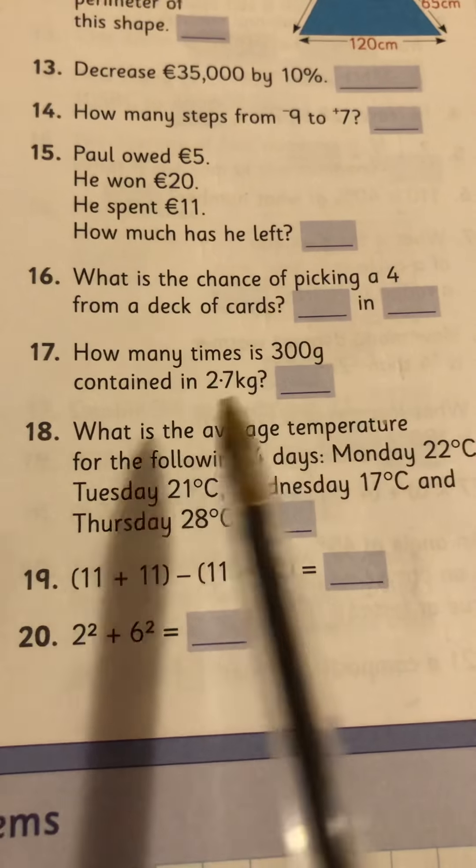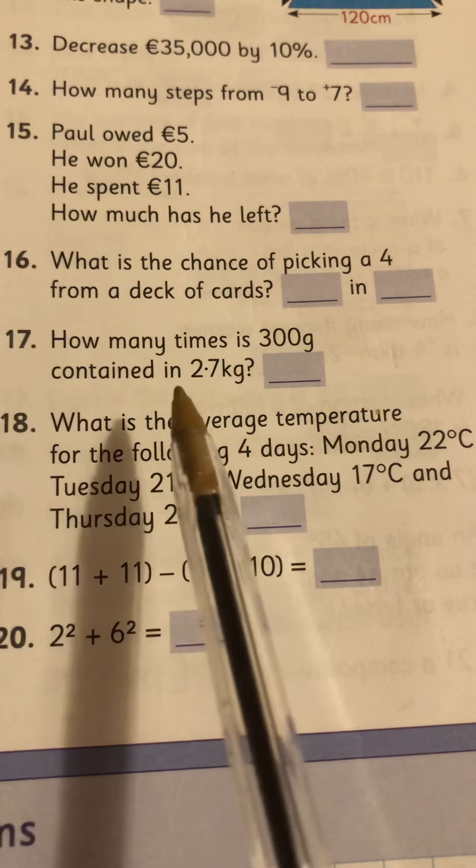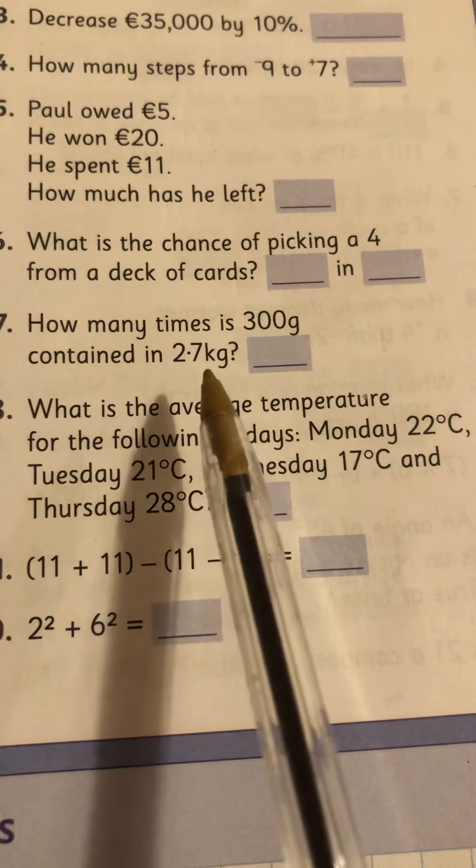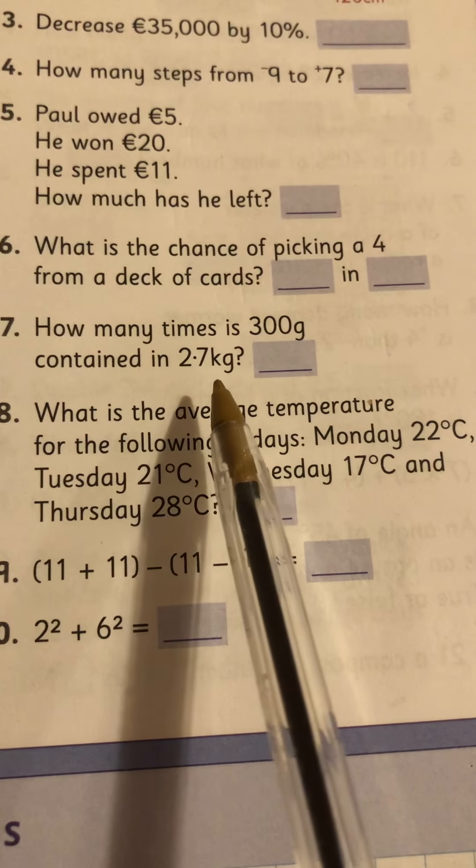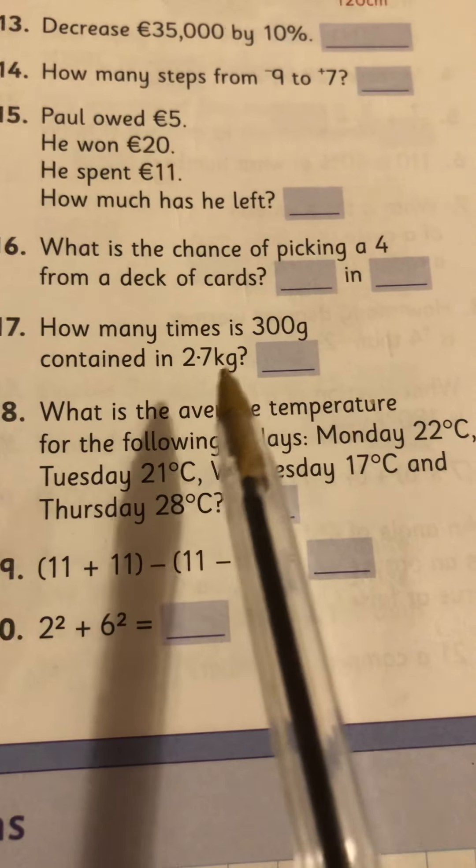Number 16, you've done them loads. Number 17, how many times is 300 grams contained in 2.7 kilograms? So change the 2.7 kilograms to grams. And then how many 300 grams are in that?